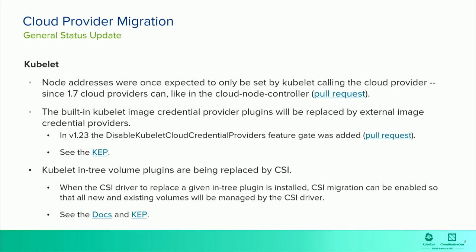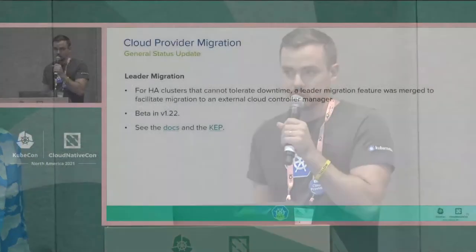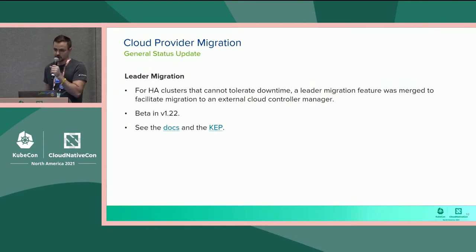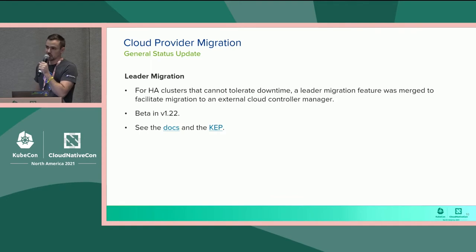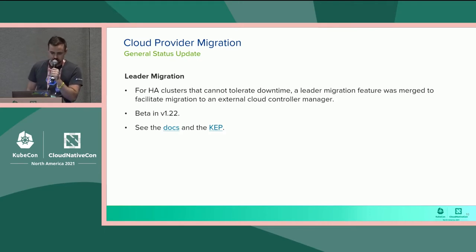The in-tree volume plug-ins are the final piece of Kubelet — these are being replaced by CSI. In terms of kube controller manager migration, there is a feature that's important for HA clusters. If your cluster cannot tolerate downtime, you should check out the leader migration KEP. This is beta in 1.22, and it will help you migrate a live cluster without taking down the kube controller manager.